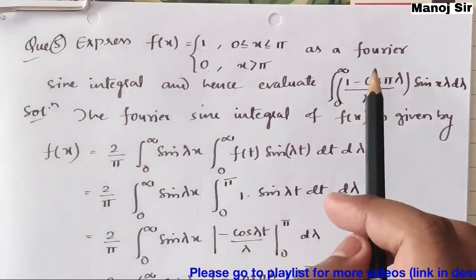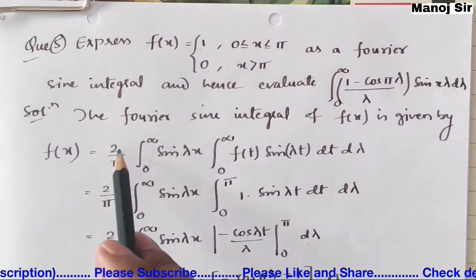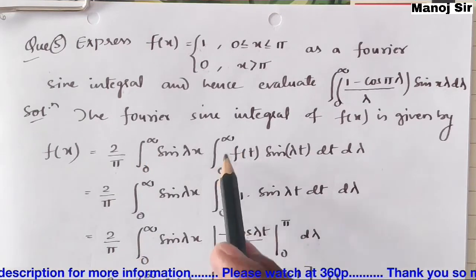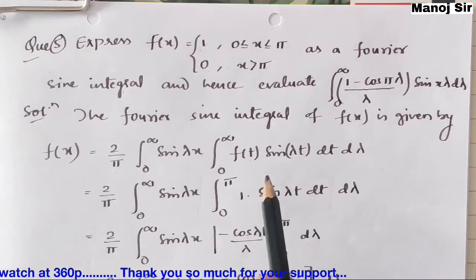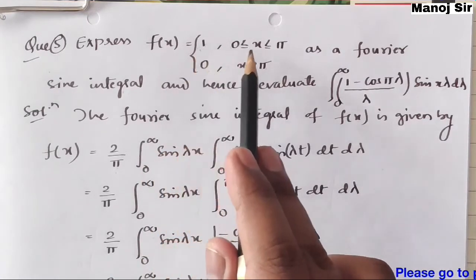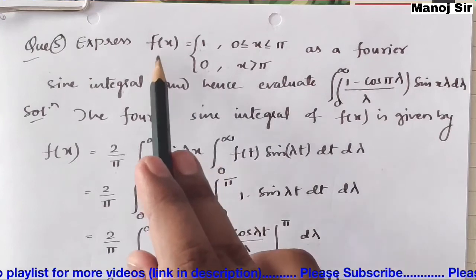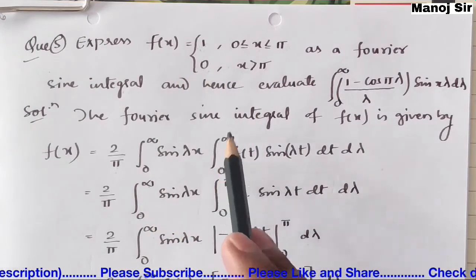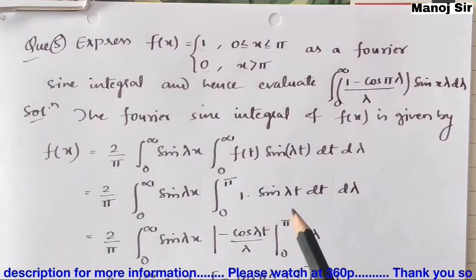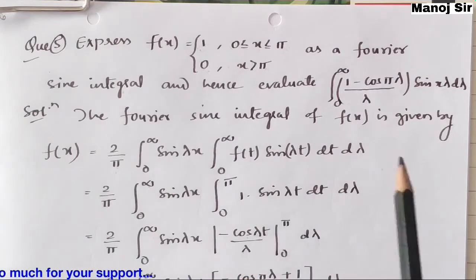First, we apply the Fourier sine integral. As we know, the Fourier sine integral for f(x) is given by (2/π) × integration from 0 to infinity of sin(λx) × [integration from 0 to infinity of f(t) sin(λt) dt] dλ. For this function, f(x) = 1 when x is from 0 to π, and f(x) = 0 when x is from π to infinity, so the inner integral only needs to go from 0 to π.